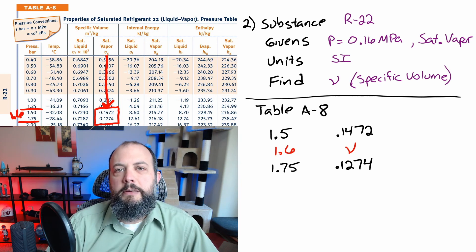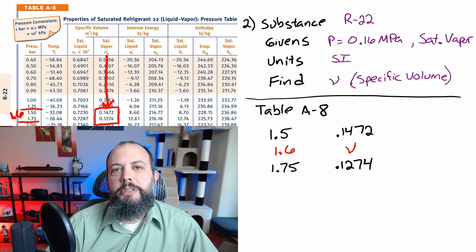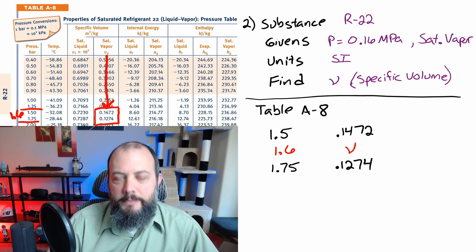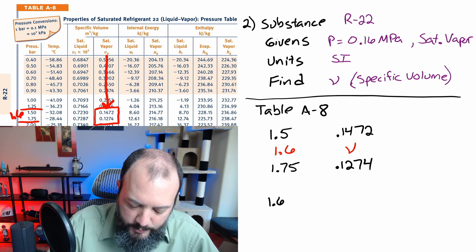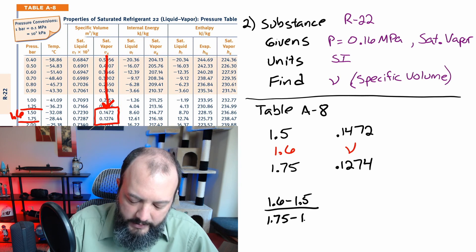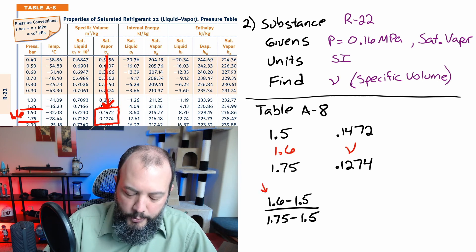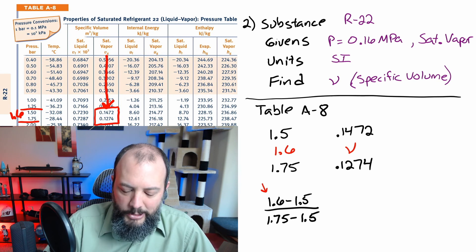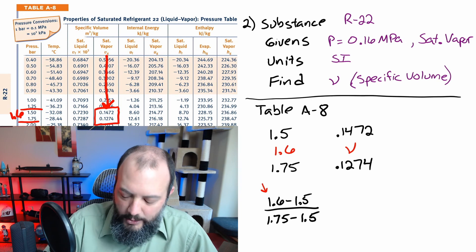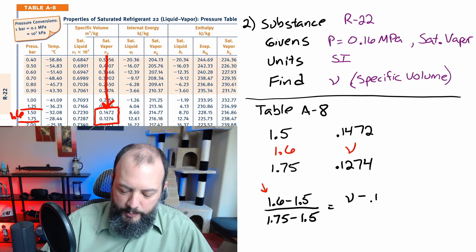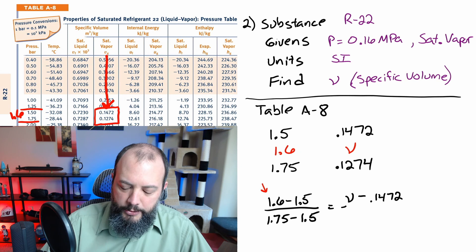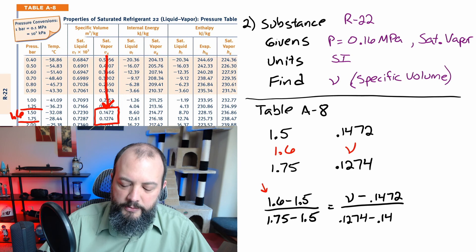Just like in finding quality I'm going to set up two fractions with the smaller distance in the numerator and the total distance in the denominator. So for bar that's going to be 1.6 minus 1.5 in the numerator. 1.75 minus 1.5 in the denominator. So the numerator has your in-between value minus the lowest value. And then the denominator has the highest minus lowest. Then I'm going to do the same thing on the right hand side. Put my variable specific volume in the numerator minus the upper value. And then in the denominator I'll subtract the two values from the table.